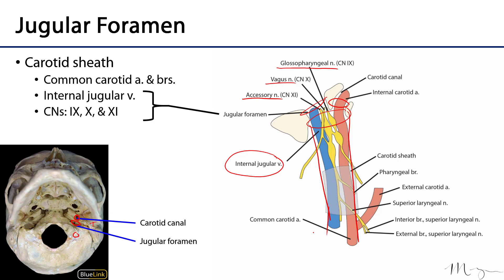The carotid sheath bundles these elements together as they are transmitted through the neck. The major constituents within the carotid sheath include the carotid arteries — common, internal, external, and their various branches — the internal jugular vein, cranial nerve 10 throughout, and proximally cranial nerves 9 and 11.